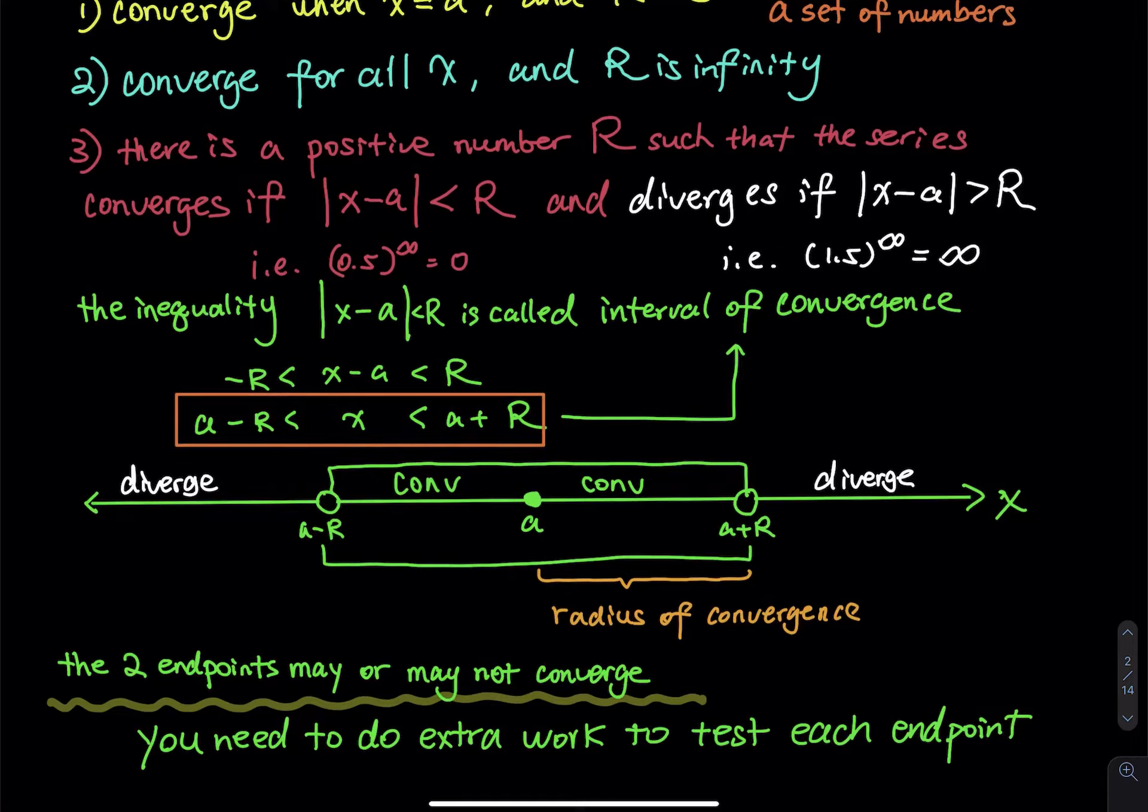For a picture, you have a straight line represented by x, all the x values. The lower limit is a minus R on the left. The upper limit is a plus R. Every x value between these two cuts will make the power series convergent, including a itself.